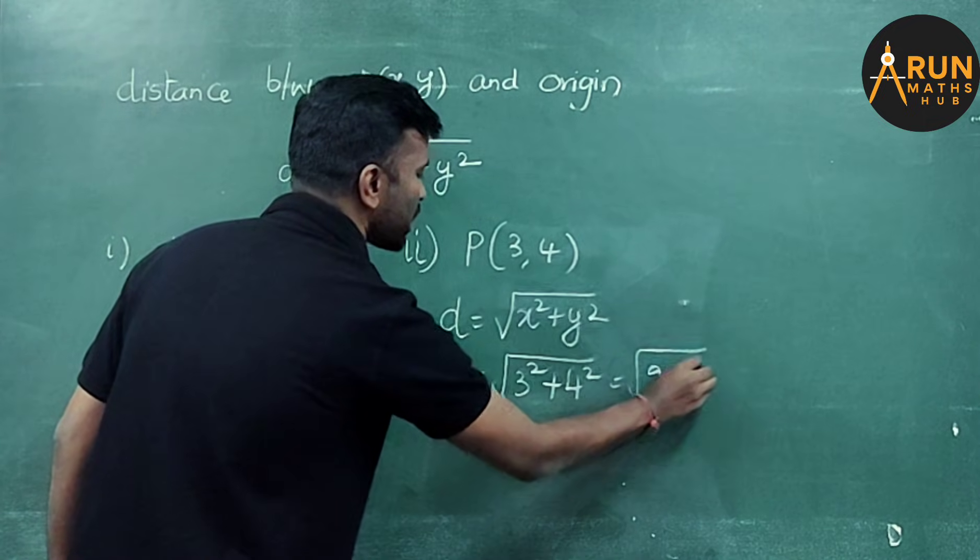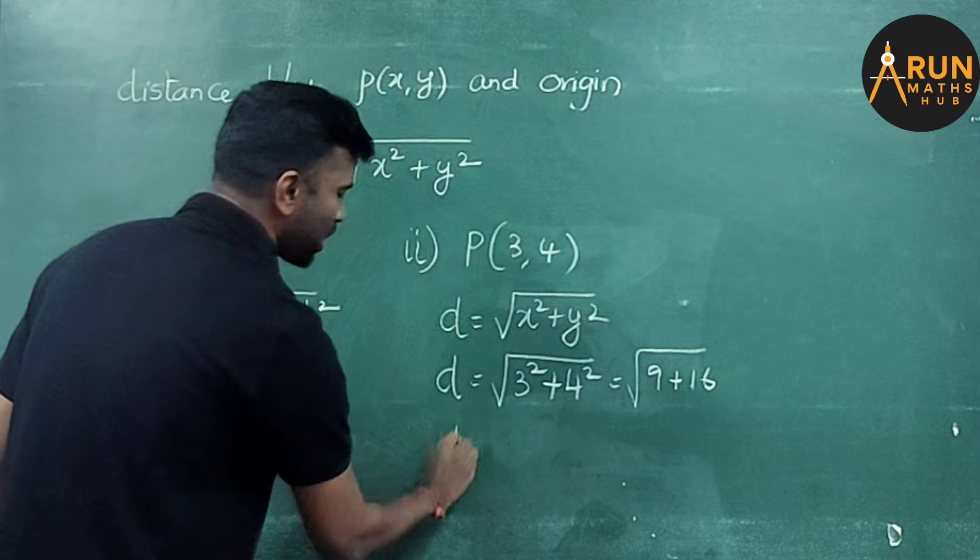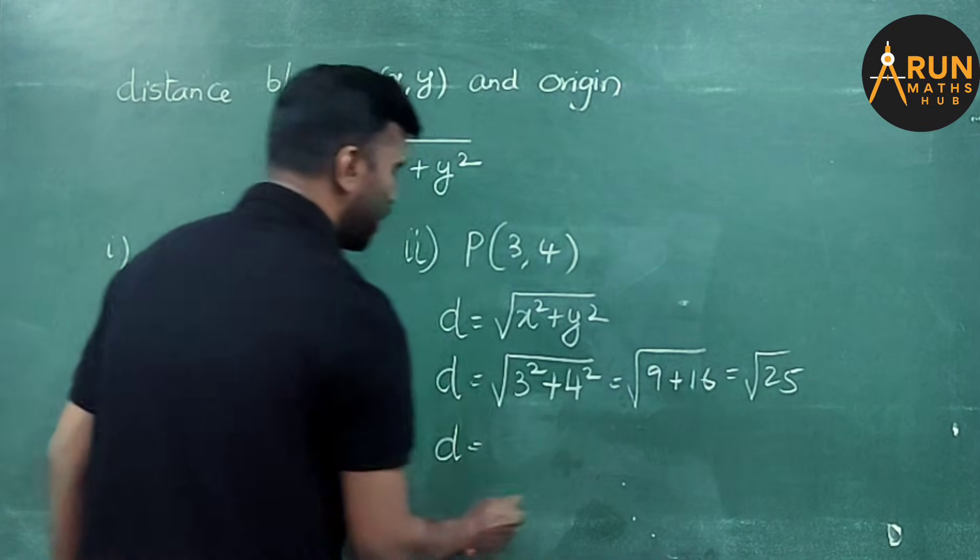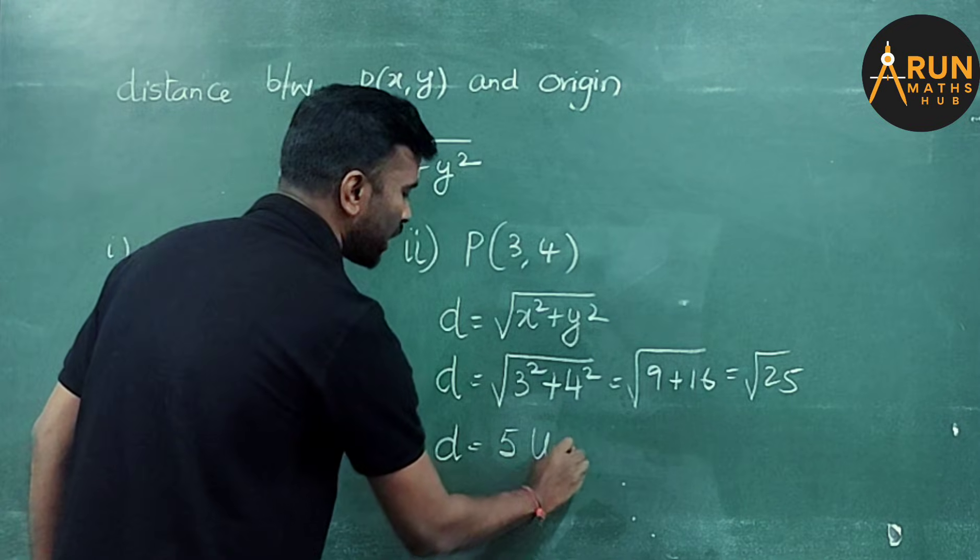What is 3 square? 9. 9 plus 16. So d equals, it is 25. Square root of 25 is 5 units. Got it?